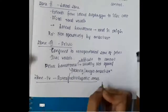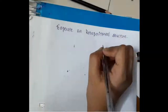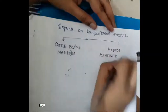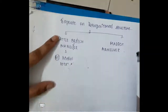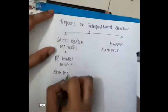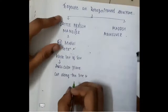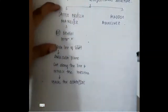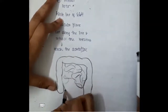Zone 4 is the portal or retrohepatic area. To access retroperitoneal structures, two manoeuvres are used. In the Cattell-Braasch manoeuvre, right medial rotation is performed by identifying the white line of Toldt — an avascular plane — incising along it, and retracting the intestine to reach the inferior vena cava and right kidney.